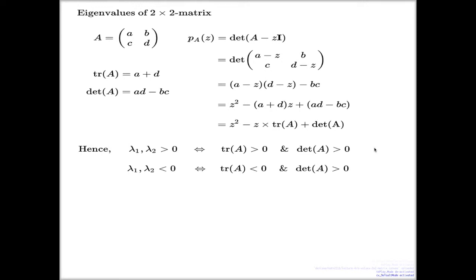If you have different signs, one eigenvalue positive, the other is negative. Say, lambda 1 is positive and lambda 2 is negative.